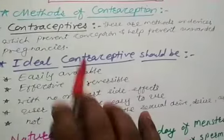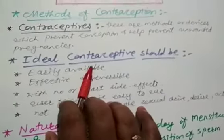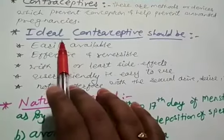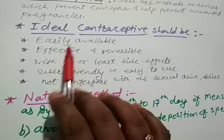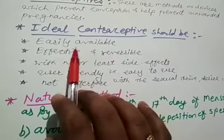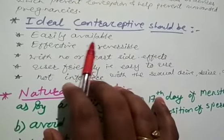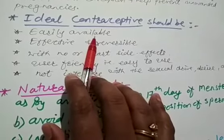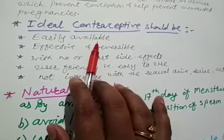Before that we have to understand what type of contraceptive we can call ideal for use. There are some properties which, if present in a contraceptive, make it ideal and suitable for use. The first thing is that the contraceptive should be easily available, so people can use it without any hesitation, and if it is present everywhere, that is good for people.